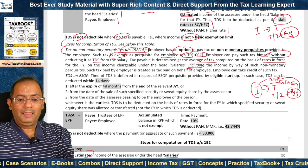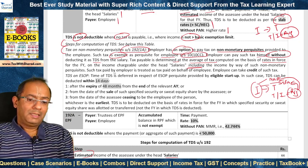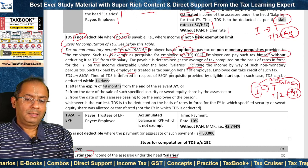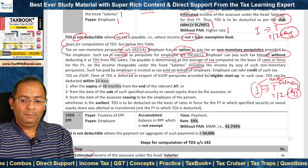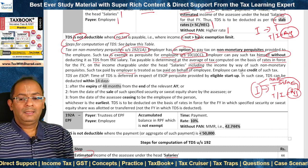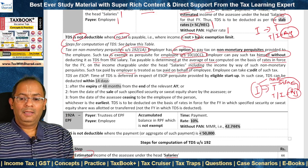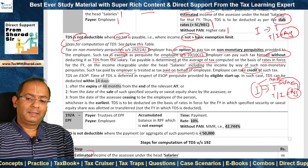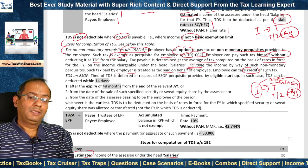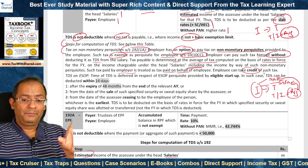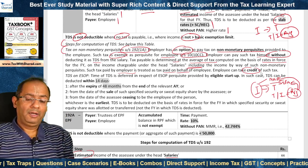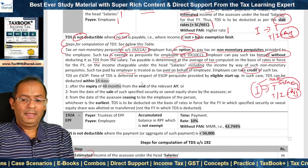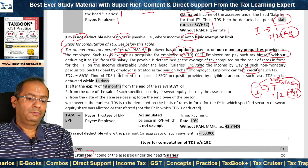Such tax paid by the employer on non-monetary perquisites is treated as tax paid on behalf of the employee. Consequently, the employee can take credit of such tax against his final tax liability even though tax has not been deducted at source from the salary — because it has been paid by the employer, the employee can still take the credit.